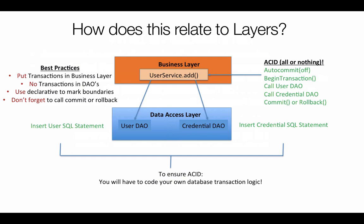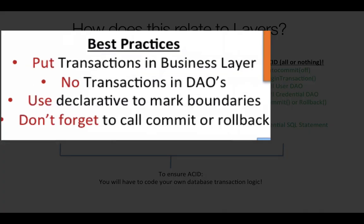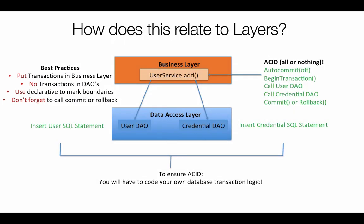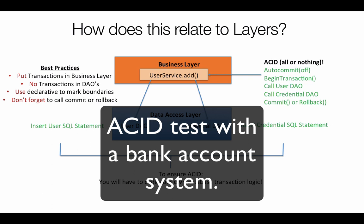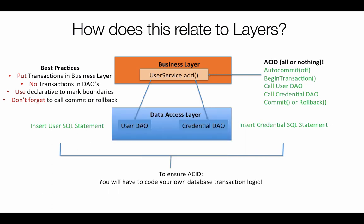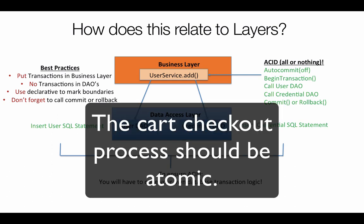Here are some good practices to make sure your data is valid. Put your transactions in the business layer — we'll demonstrate that in an in-class exercise as well as in the application. We don't do any transactions in our database administration object. We're going to use declaratives to mark the beginning and ending of a business transaction, and we will call either the commit statement or rollback at the end of our process. In the next few videos, we'll go through a simple checking account processing system to demonstrate how ACID procedures should work, and then we'll come back to our shopping cart application to implement a checkout process with an atomic transaction.